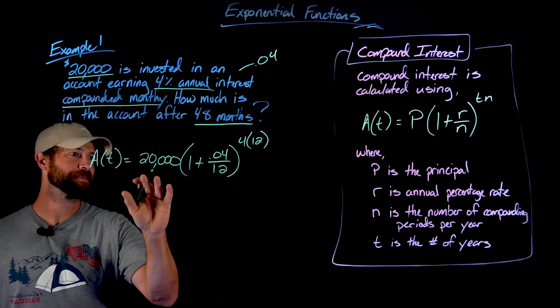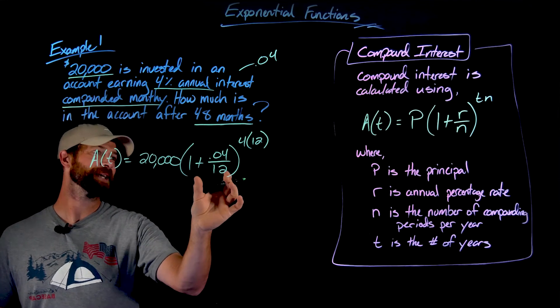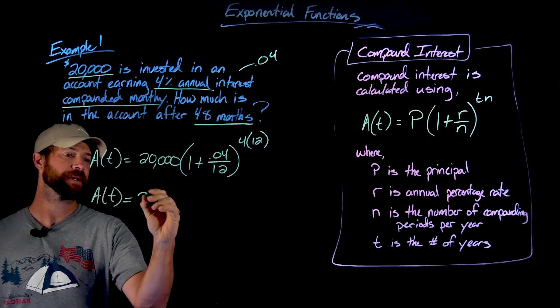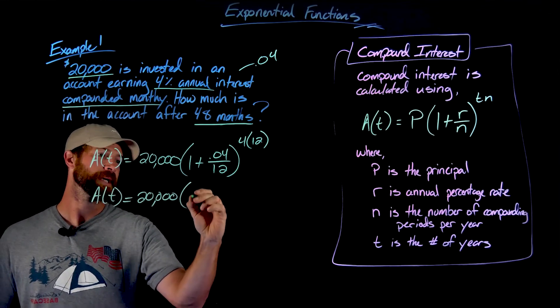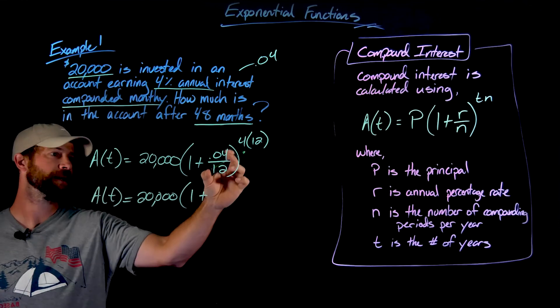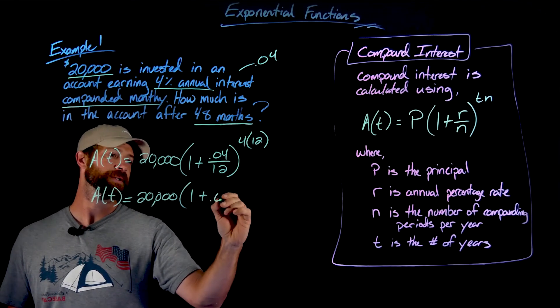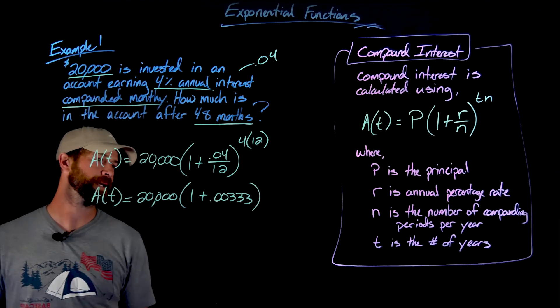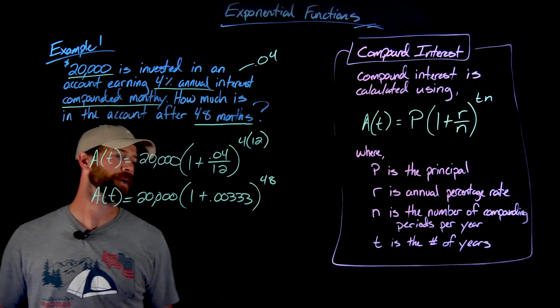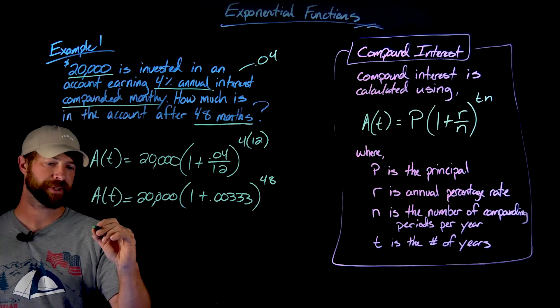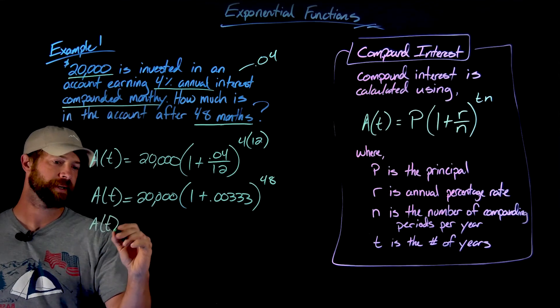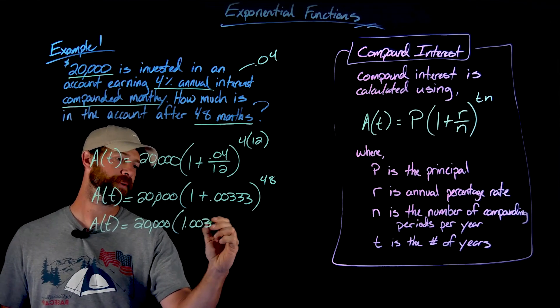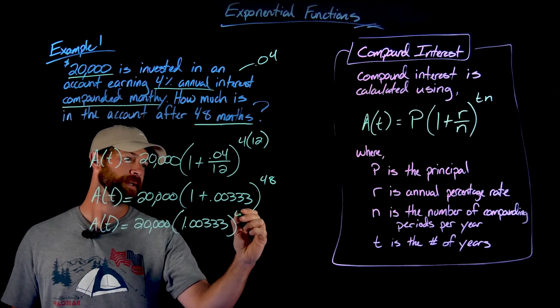So we have our setup, we have our principal amount, and we have our growth factor here. We need to do the work on this first. So we have $20,000 put in this account. And then we have 1 plus 0.04 divided by 12 is 0.00333 repeating, but that's enough decimal places, I think. And then raised to the 48 for 48 compounding periods. This can be put together quickly right here to give us 20,000 times 1.00333 to the 48th.